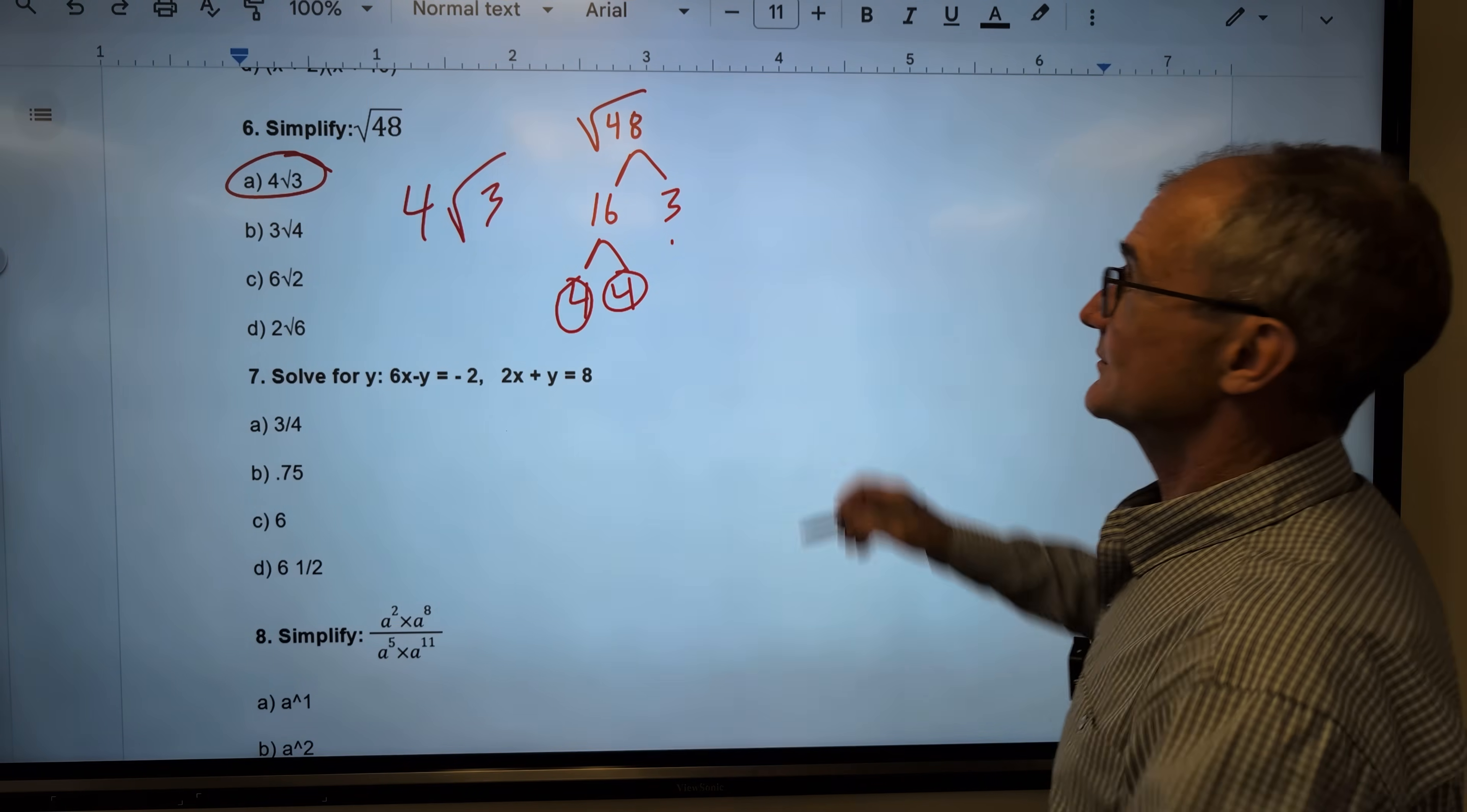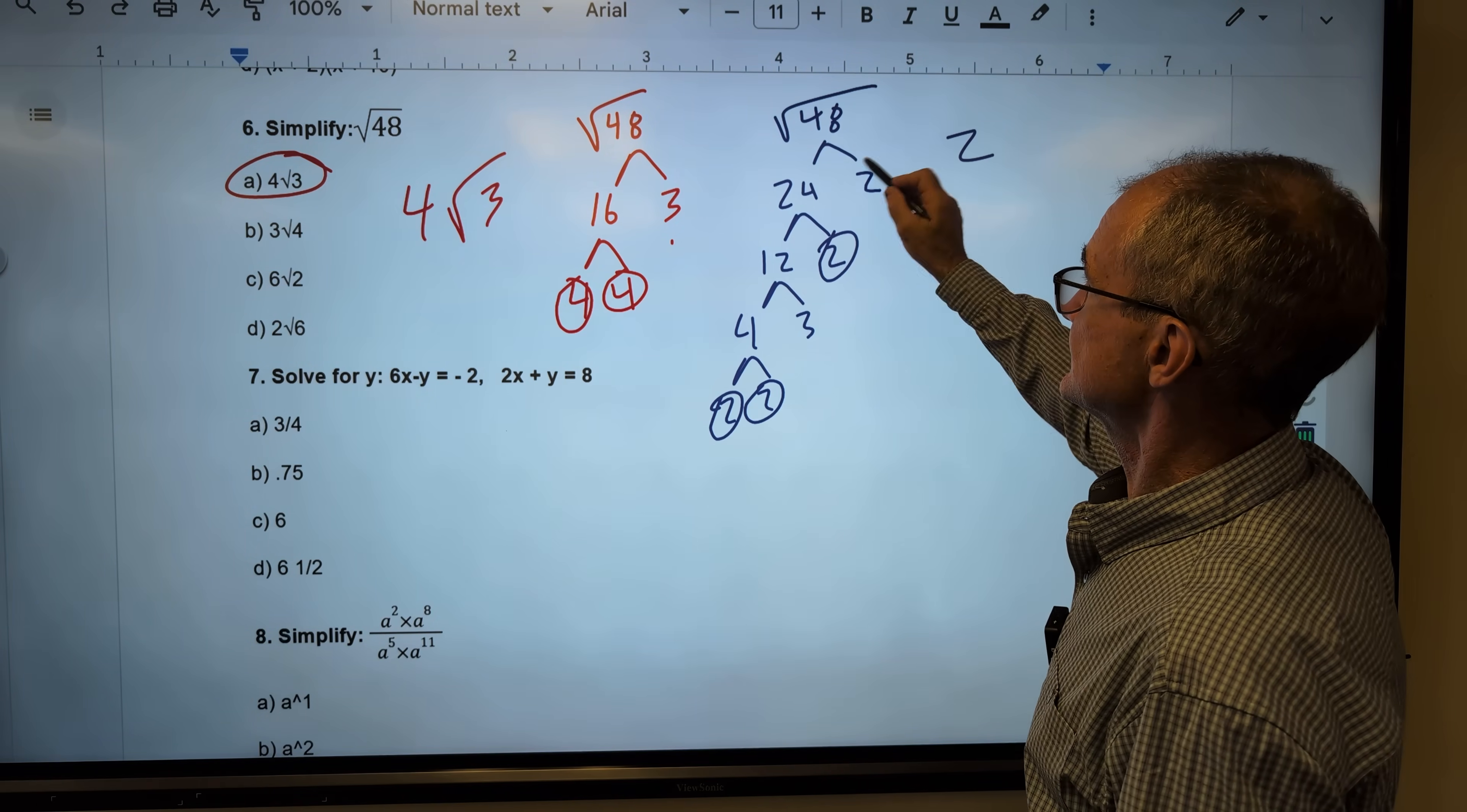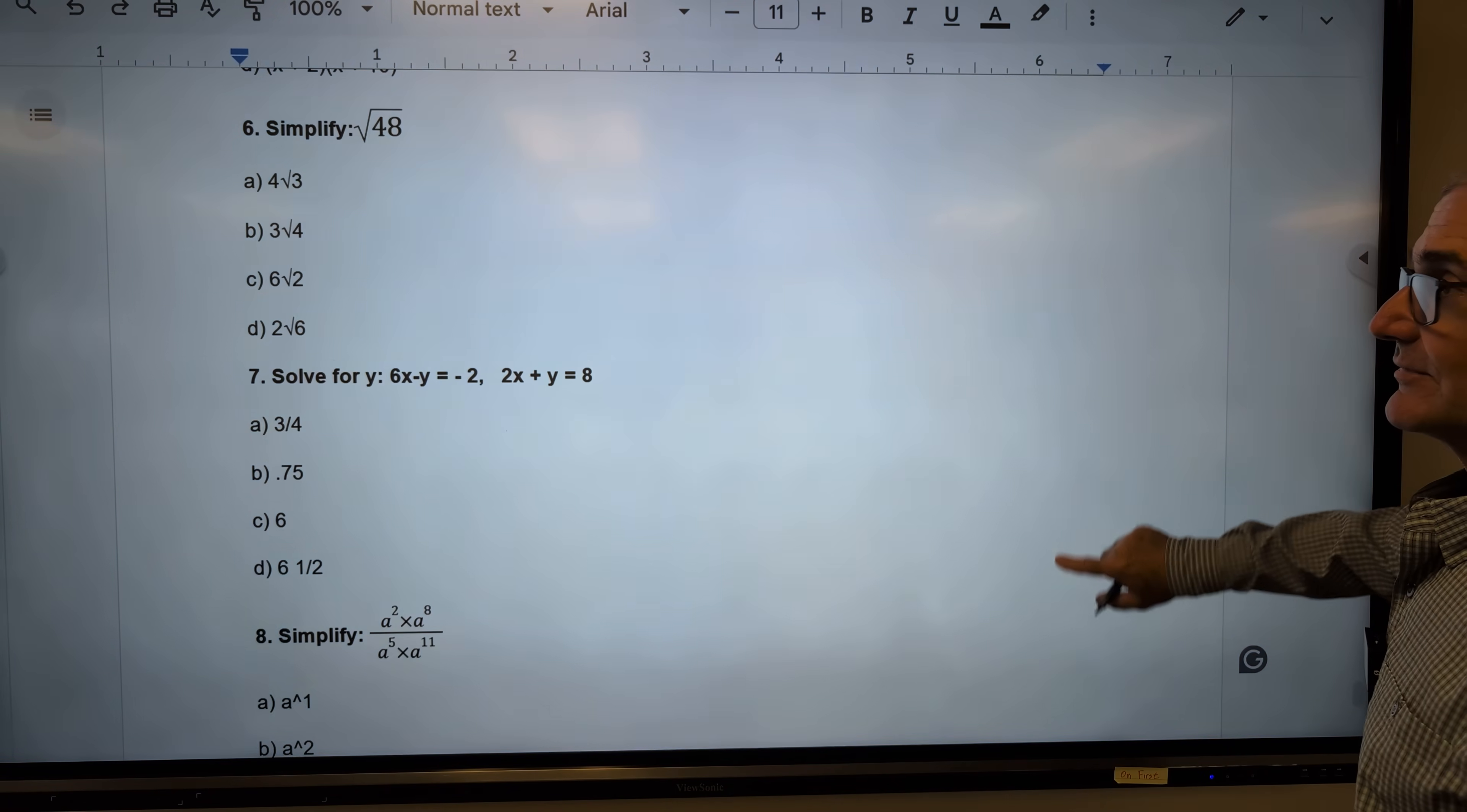Let's say I did it a different way. I saw root 48 is equal to a 24 and a 2. That's okay. 24 is a 12 and a 2. 12 is a 4 and a 3. A 4 is a 2 and a 2. For every pair, one comes out. Here's a pair of twos. One comes out. Here's a pair of twos. One comes out. No pair for that 3. It stays in. 2 times 2 is 4. Still gives me 4 root 3. A lot of ways to do these problems. The more you practice them, the better you're going to get. I just saw 48 is a perfect square. So I knew how it's going to be able to go there.